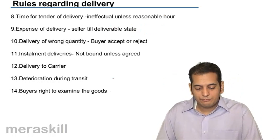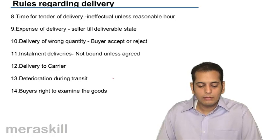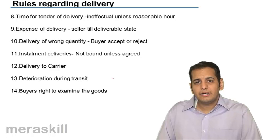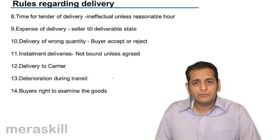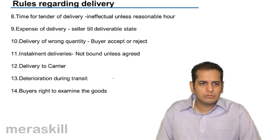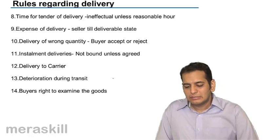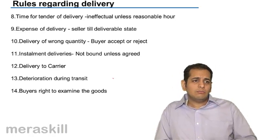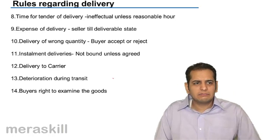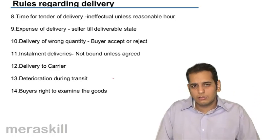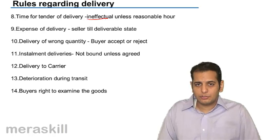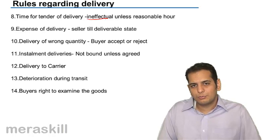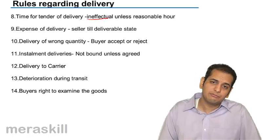Time for tender of delivery: delivery should be made at the specified time, which should normally be during usual business hours — like 9 to 5 or 9 to 6. Delivery should not be made at 12 o'clock at night or 4 o'clock in the morning. Such a delivery will be ineffectual — meaning even if the seller has delivered the goods, it will be considered as if no delivery has been made.